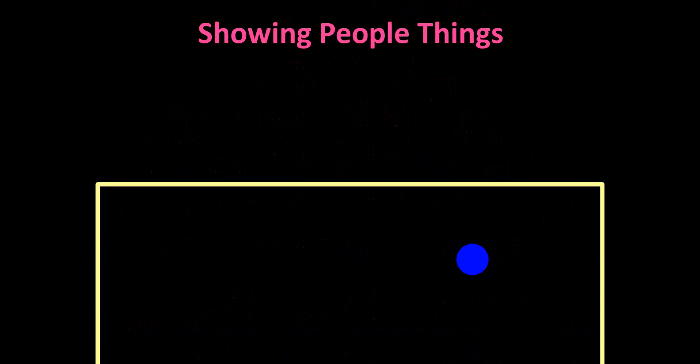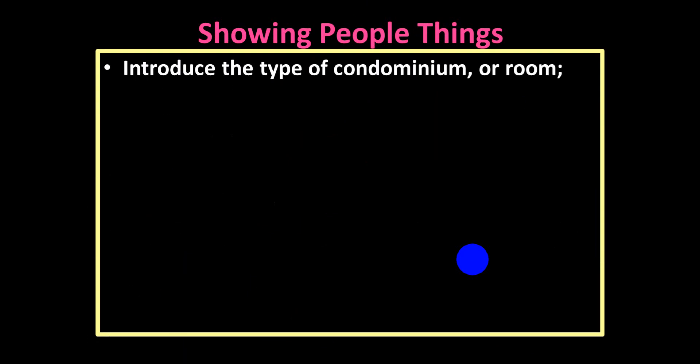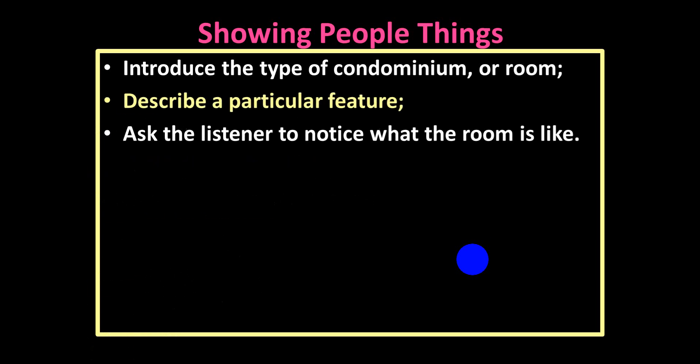Here we have: introduce the type of condominium or room, describe a particular feature, and ask the listener to notice what the room is like. For example, if you'd like to show people things, you say first introduce the type of condominium or room.